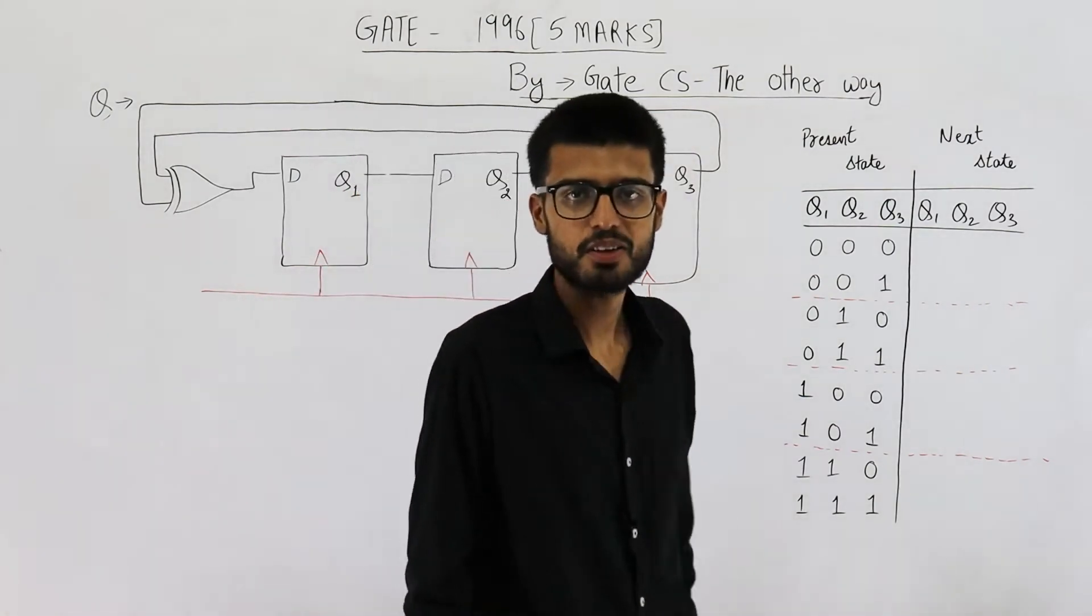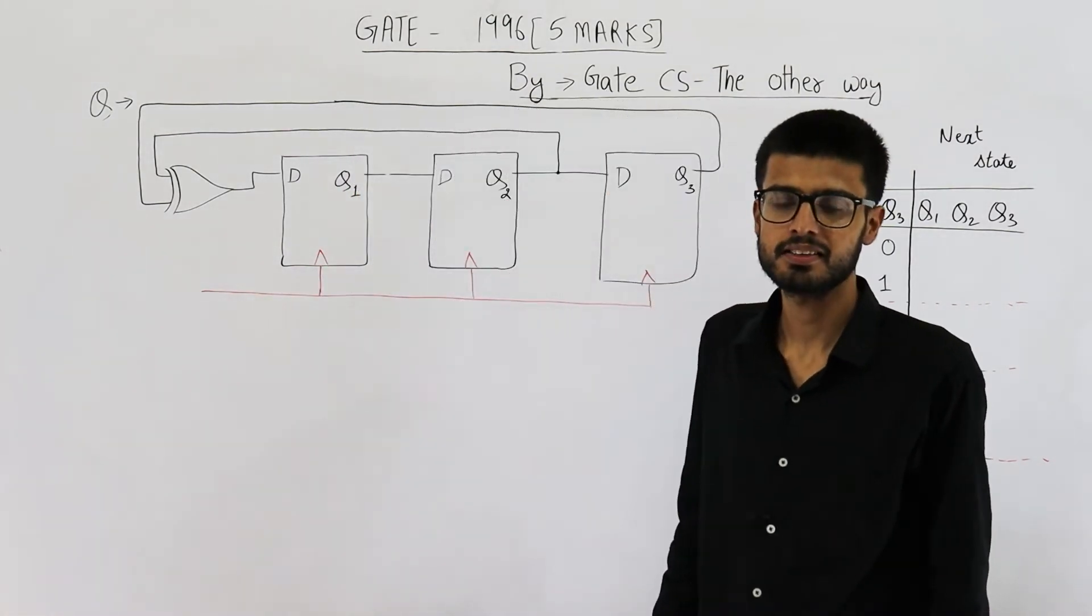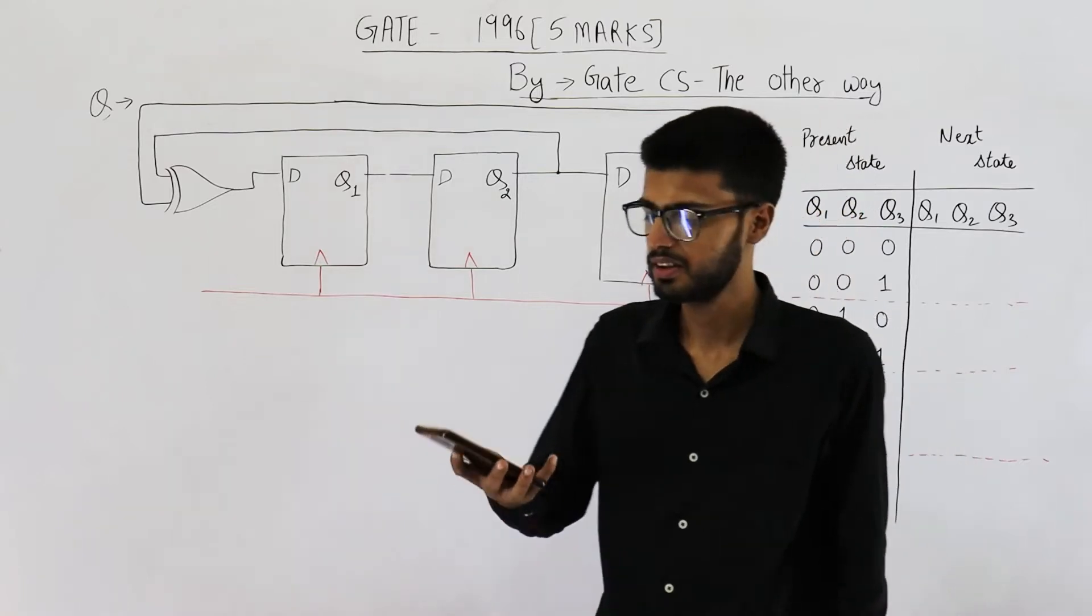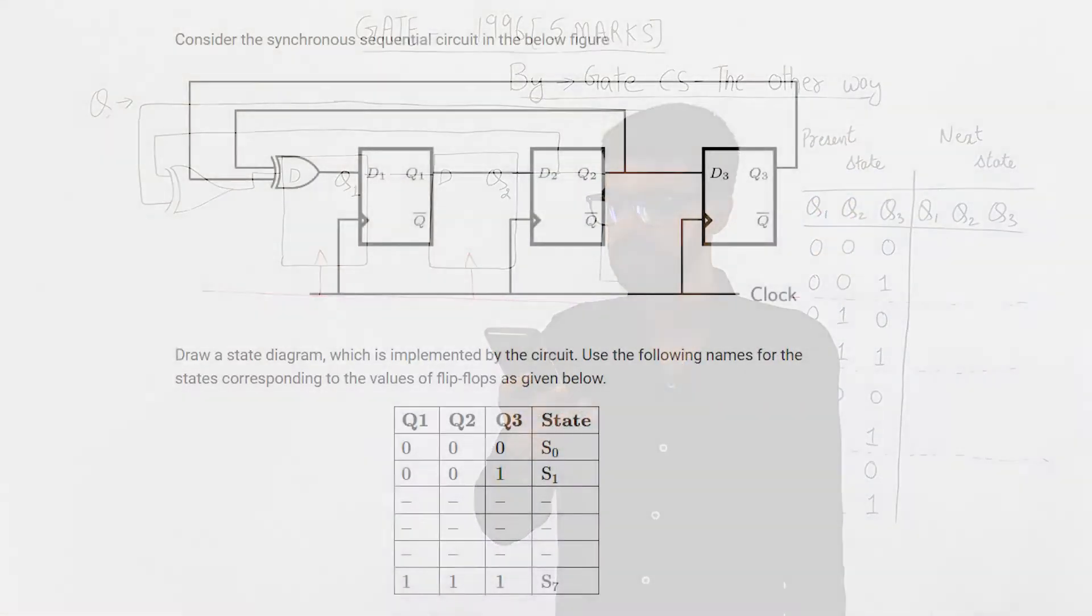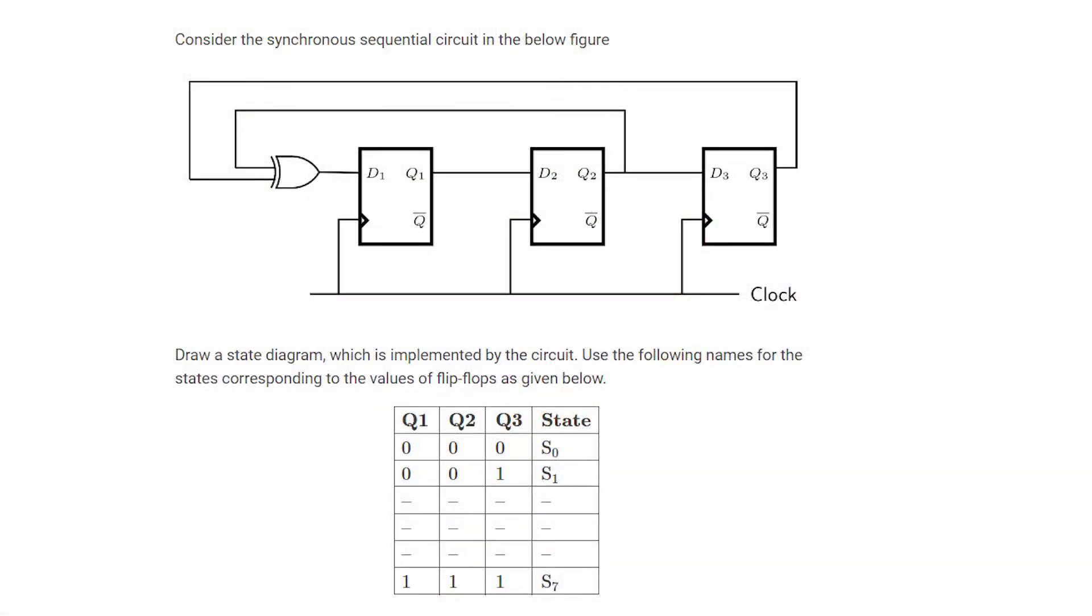Hello students, welcome back. The question is from the 1996 exam. Just have a look at the statement. It says, consider the synchronous sequential circuit in the figure below. Draw a state diagram which is implemented by the circuit. Use the following names for states corresponding to values of flip-flops as given below.